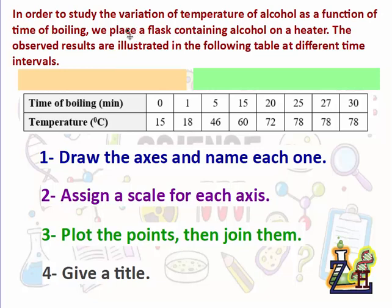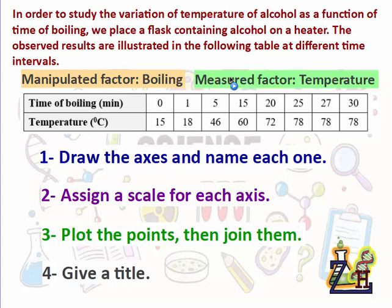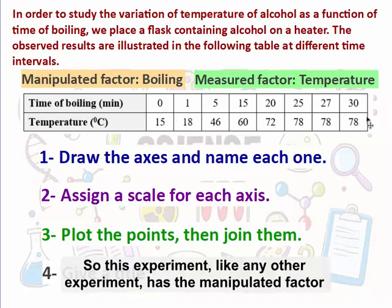We notice that as an experiment there are the manipulated factor and the measured factor. In this experiment, the manipulated factor is the time of boiling, while the measured factor is the temperature of alcohol. When we know the factors, drawing the graph becomes very easy.